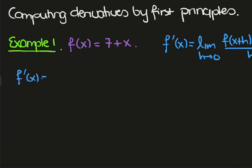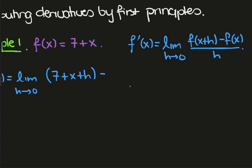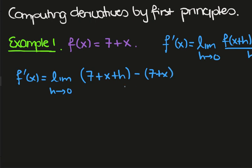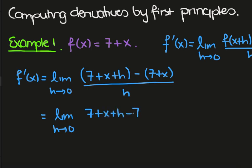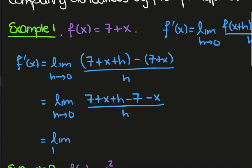From the formula we have the limit as h tends towards zero of f of x plus h, which is found by replacing x with x plus h — so we have 7 plus x plus h. The f of x term is just 7 plus x, divided by h. This simplifies to the limit as h tends towards zero of 7 plus x plus h minus 7 minus x, all over h. The 7s cancel, the x's cancel, and we get h over h, which is the limit of 1. Since 1 doesn't depend on h, the derivative is just 1 at every point.